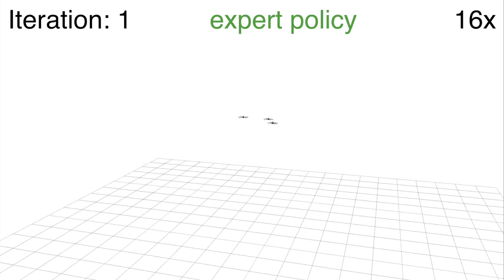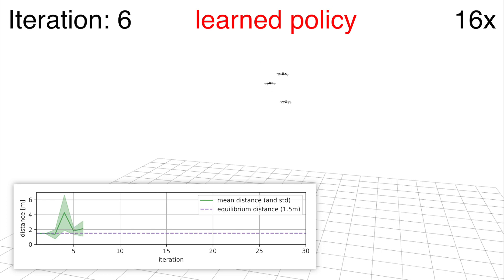We generate the first three datasets by sampling images and commands from the expert policy. In the following iterations, the drones are controlled by the policy trained on data from all previous iterations.